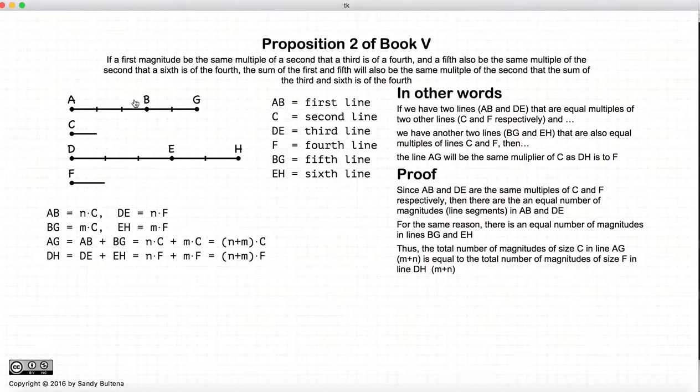And we can just count them up. So we're adding them up. In this case, it's equal to 5, but it really is just N plus M. And we can do the same thing with DE plus EH. And we end up that if we add up all the individual segments, it will also be N plus M.